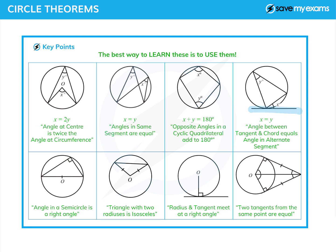If we have a tangent and a chord, then the angle between the chord and the tangent is equal to the angle in the alternate segment — the other segment on the other side of the chord. Angle in a semicircle: if I draw a diameter, then any angle I draw in that semicircle is a right angle. If I ever come across two radii, that makes an isosceles triangle.